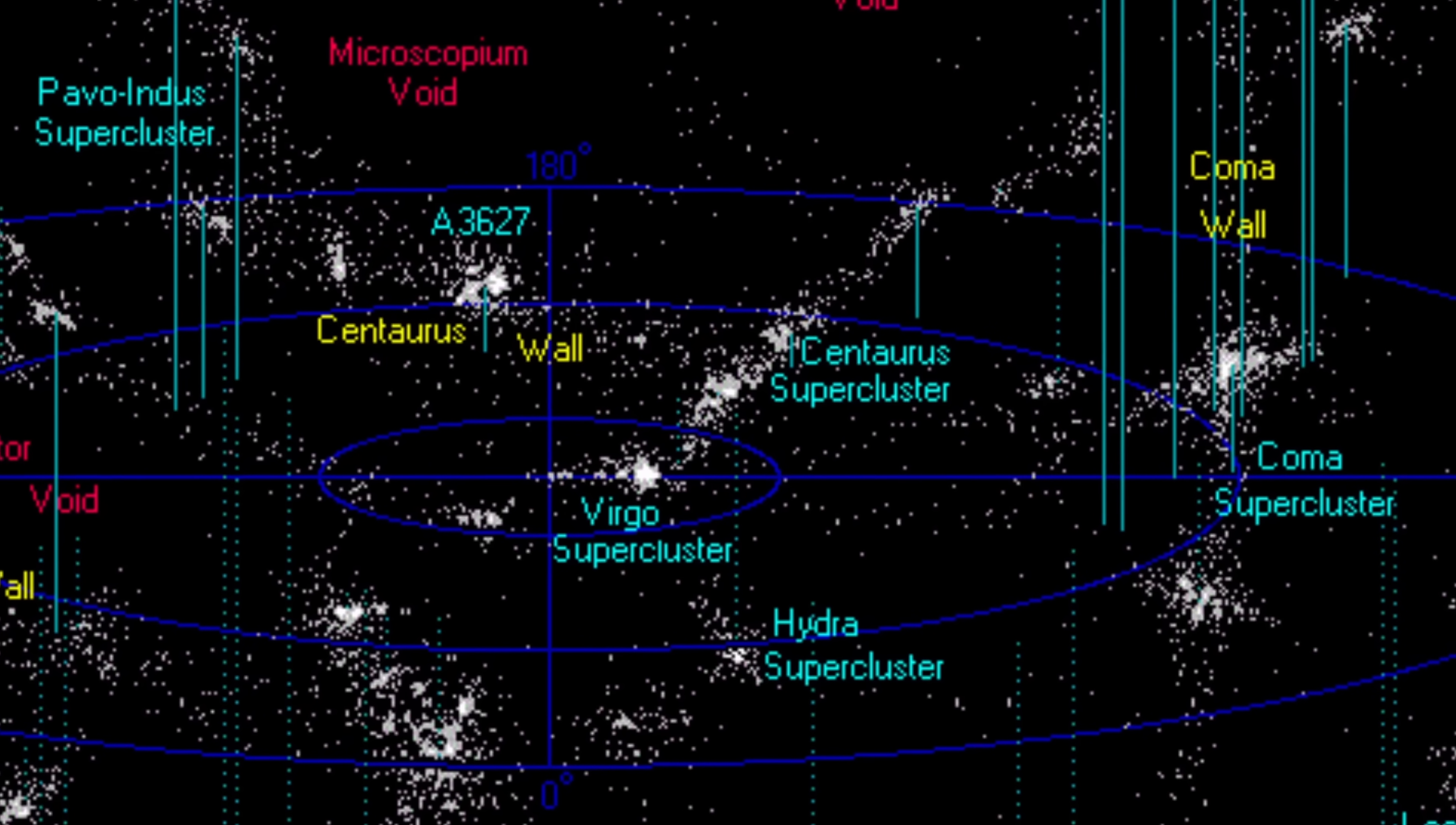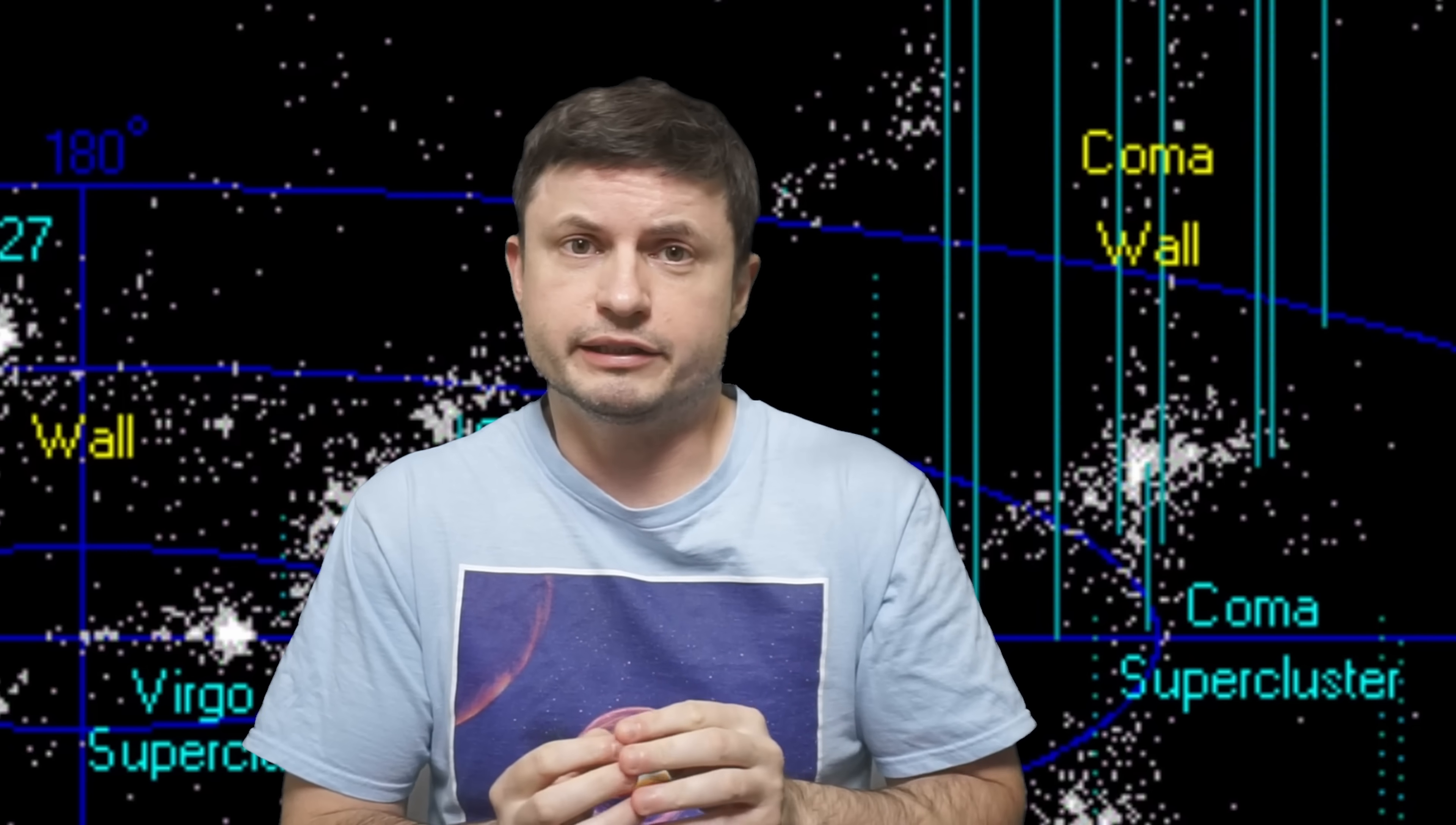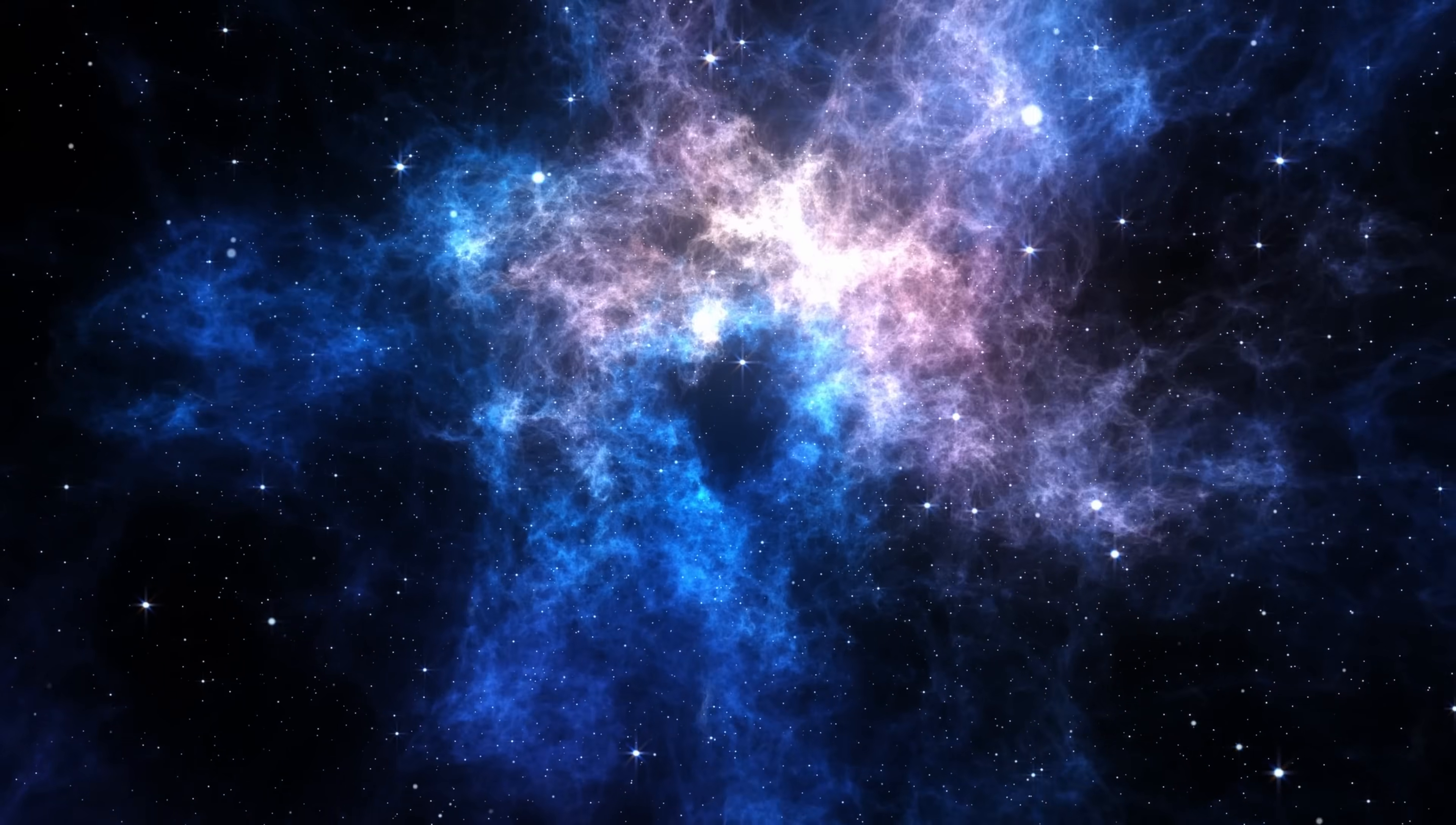And it only took three more years to discover something even larger. This was a discovery of CFA2, also known as the Coma Wall. A really large filament of galaxies containing lots and lots of matter inside, that was approximately 500 million light-years across. An enormous structure, and something that back then could not be imagined or explained.